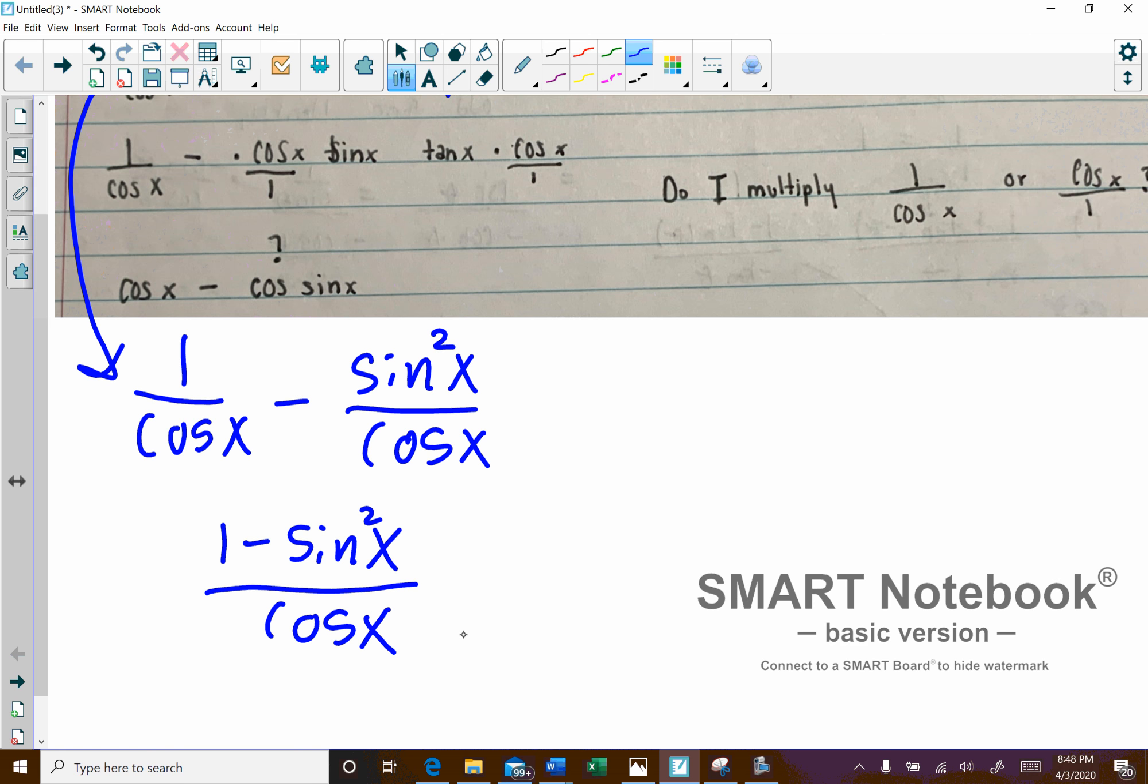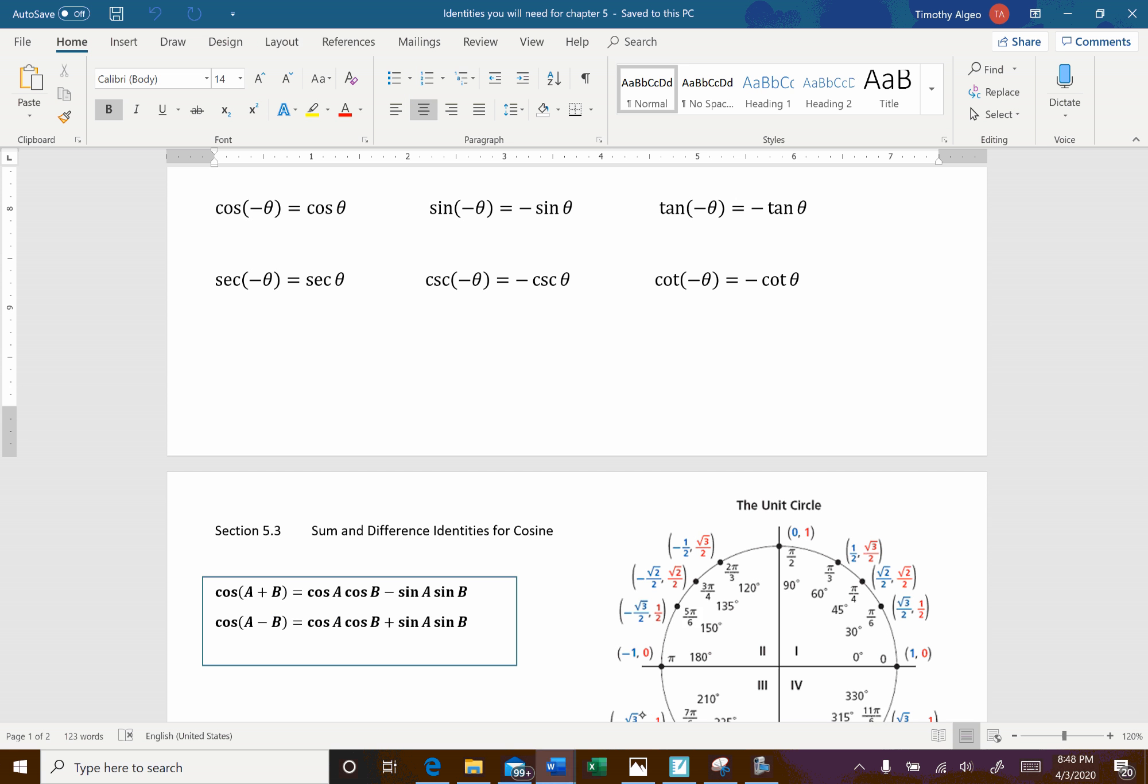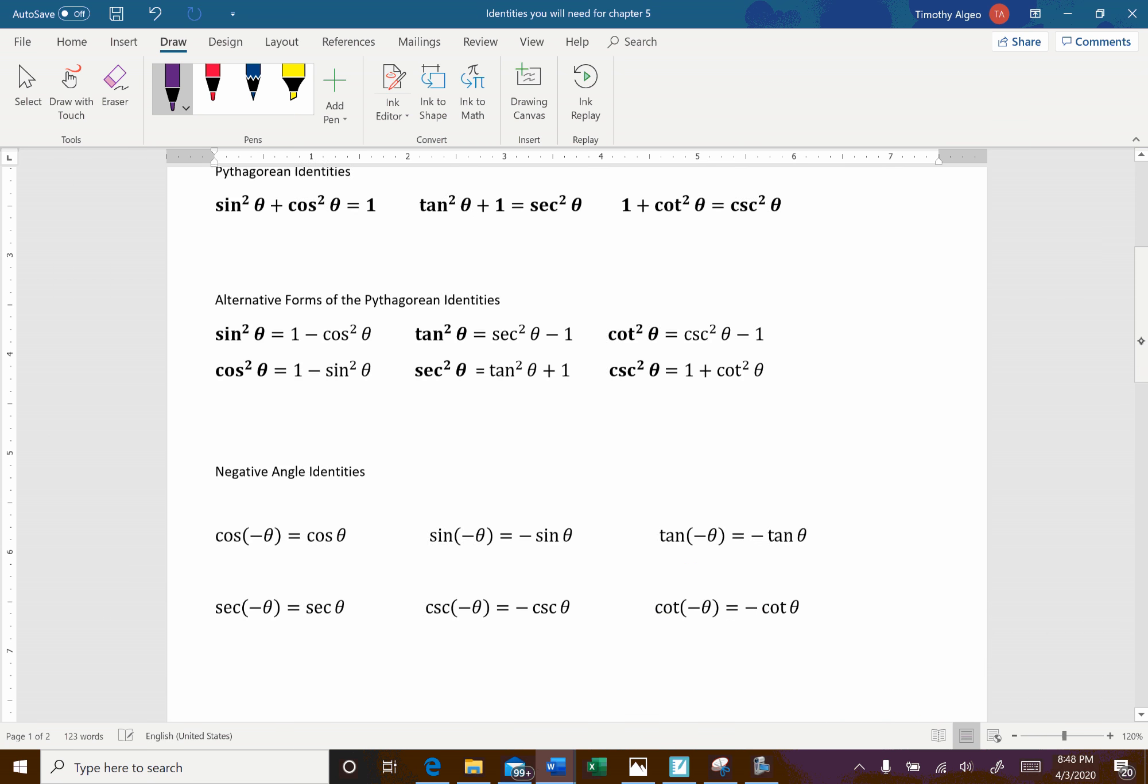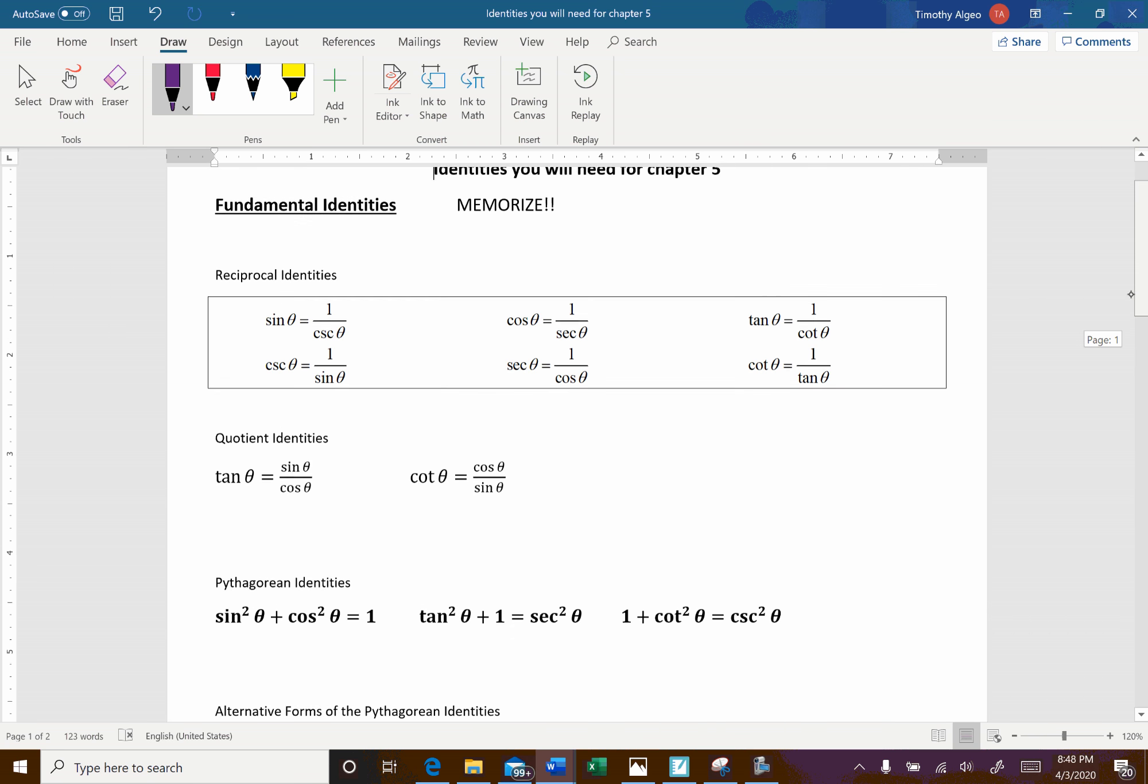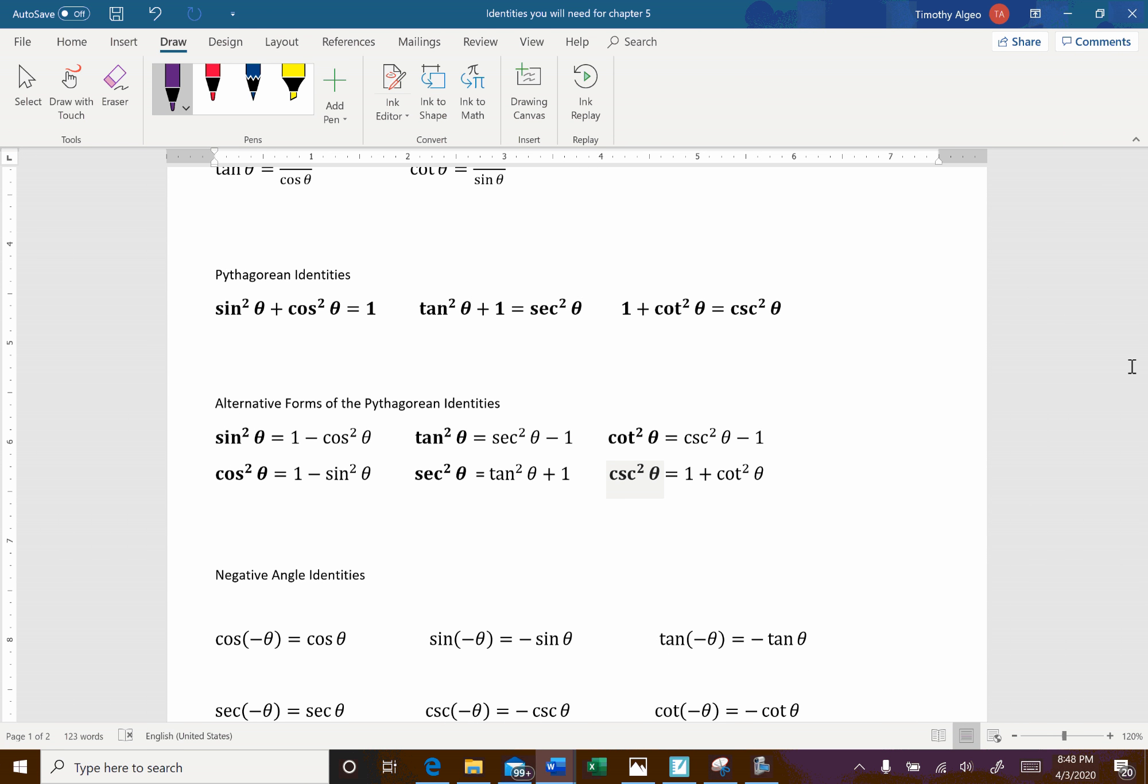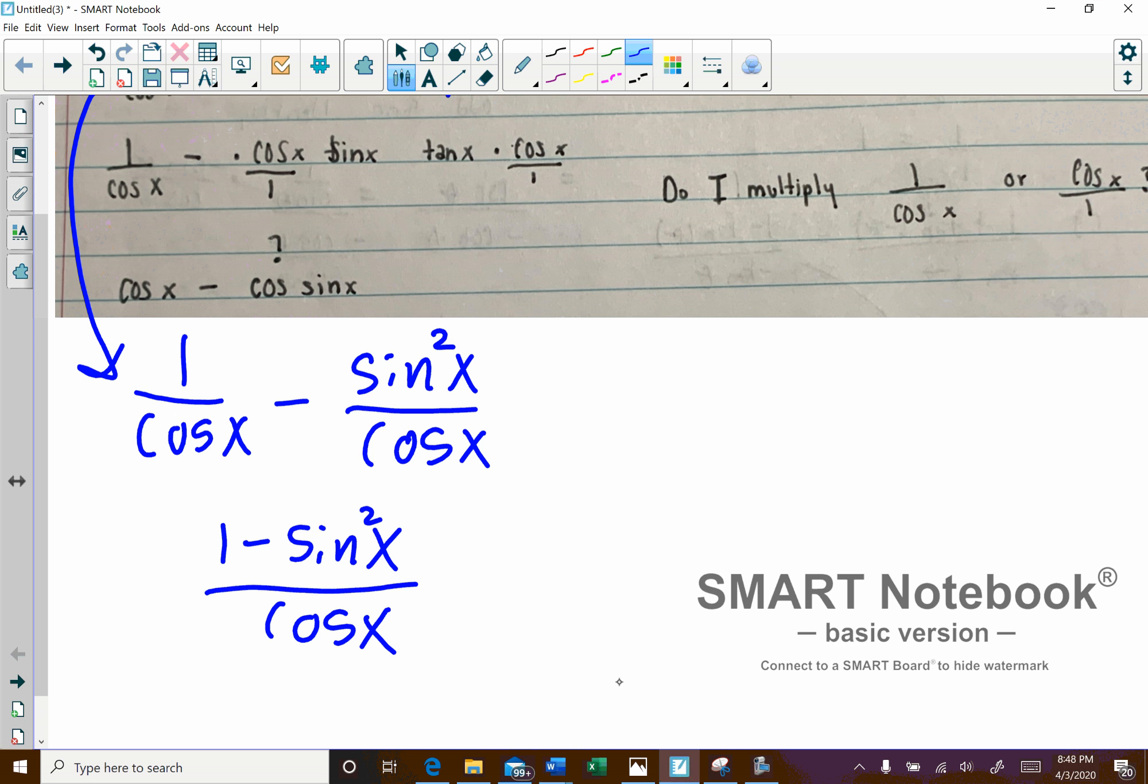And then you should know from your Pythagorean identities, I'll just go ahead and pull them up here. Here we go. So your Pythagorean identities right here, you can see that we can replace 1 minus sine squared with cosine squared. So we'll go ahead and do that.